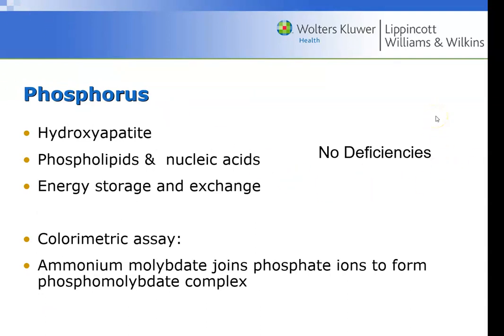Calcium, phosphorus, and magnesium are all important to the mineralization of bones. Hydroxyapatite is where calcium and phosphorus complex together to form that mineralization. Magnesium is also involved. The hydroxyapatite of your bones is also a good source of phosphorus for the formation of phospholipids, nucleic acids, and energy molecules like ATP and ADP. Typically we don't have deficiencies in phosphorus — you get enough in your diet and it's easy to absorb.